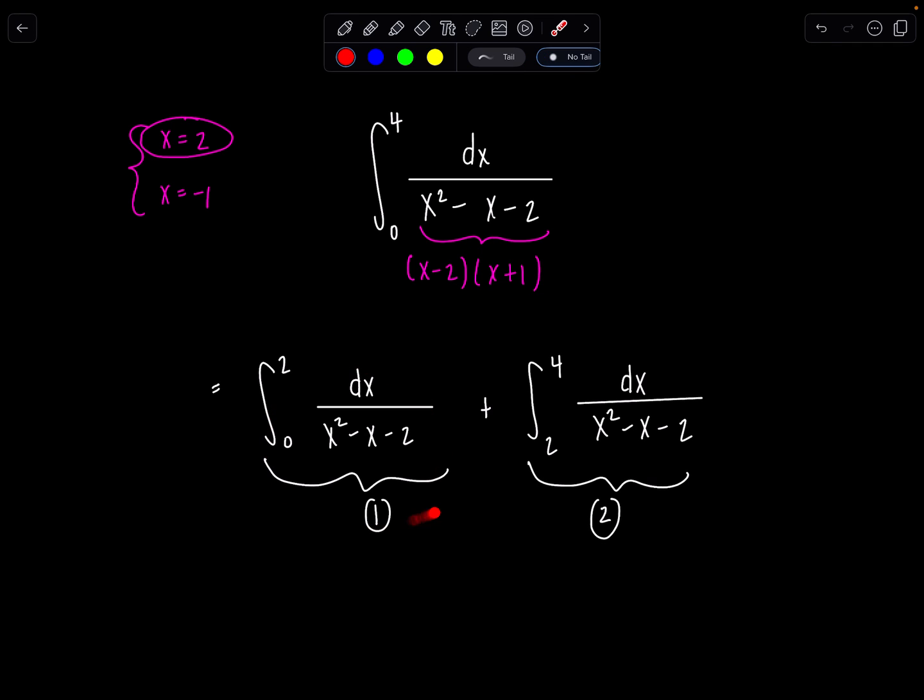If both converge, 1 and 2 converge, then we can say the overall integral that we started with will be a convergent integral. If one of these diverges, 1 or 2, then we're done. We don't have to finish the problem. We can just say that the original integral diverges.